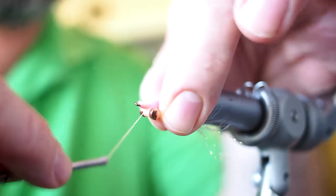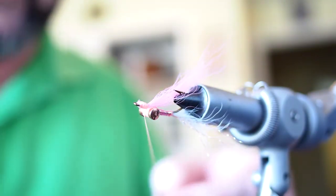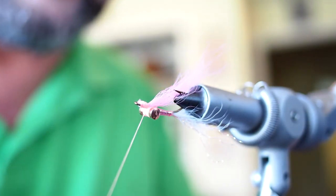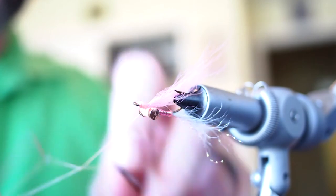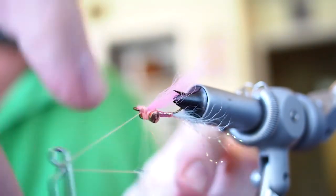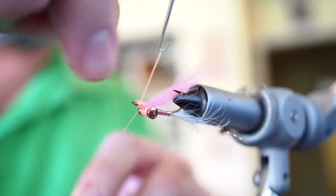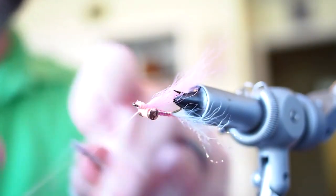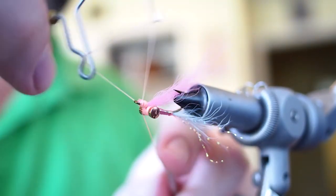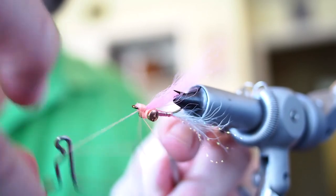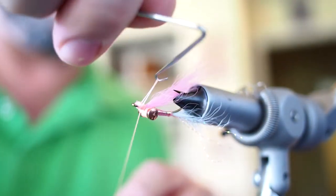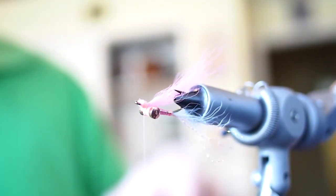After I get a nice size head, I'm just going to whip finish. I usually do four or five whips. And then trim your thread.